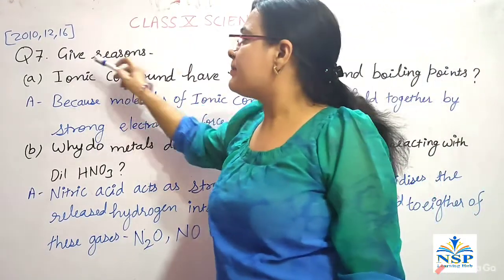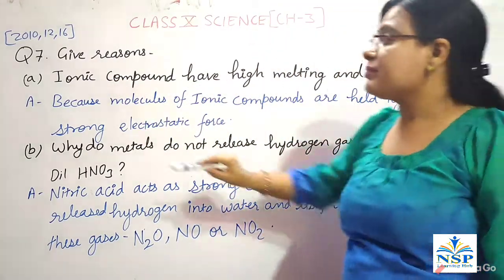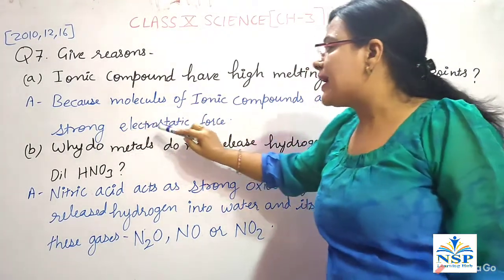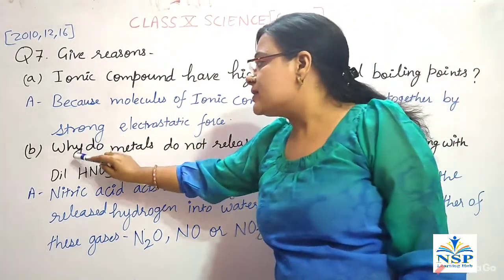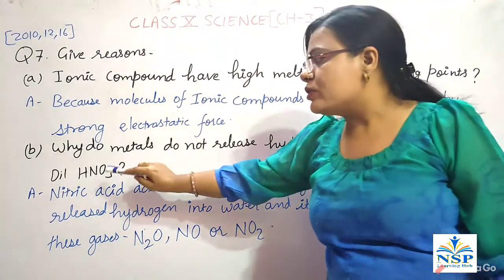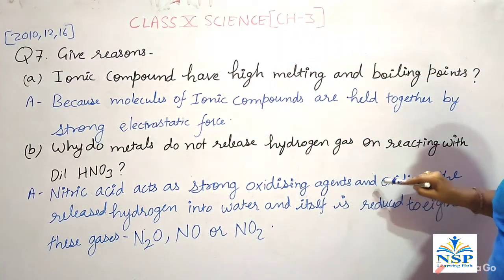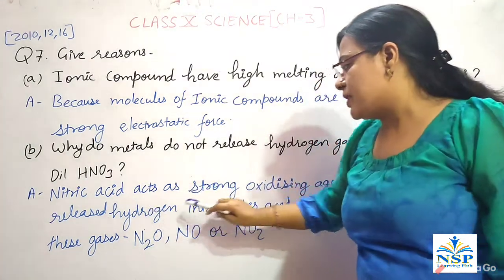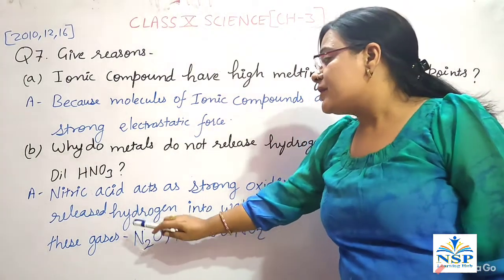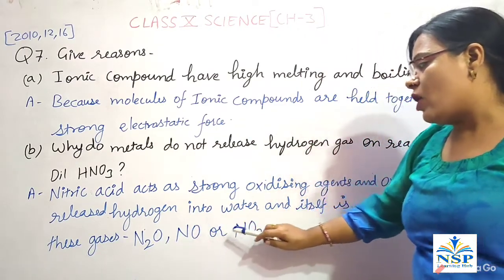Question number 7: give reasons. First, why do ionic compounds have high melting and boiling points? Because the molecules of ionic compounds are held together by strong electrostatic force. Second, why do metals not release hydrogen gas on reacting with dilute HNO₃? Nitric acid acts as a strong oxidizing agent and oxidizes the released hydrogen into water, and itself is reduced to either dinitrogen oxide, nitrogen monoxide, or nitrogen dioxide.